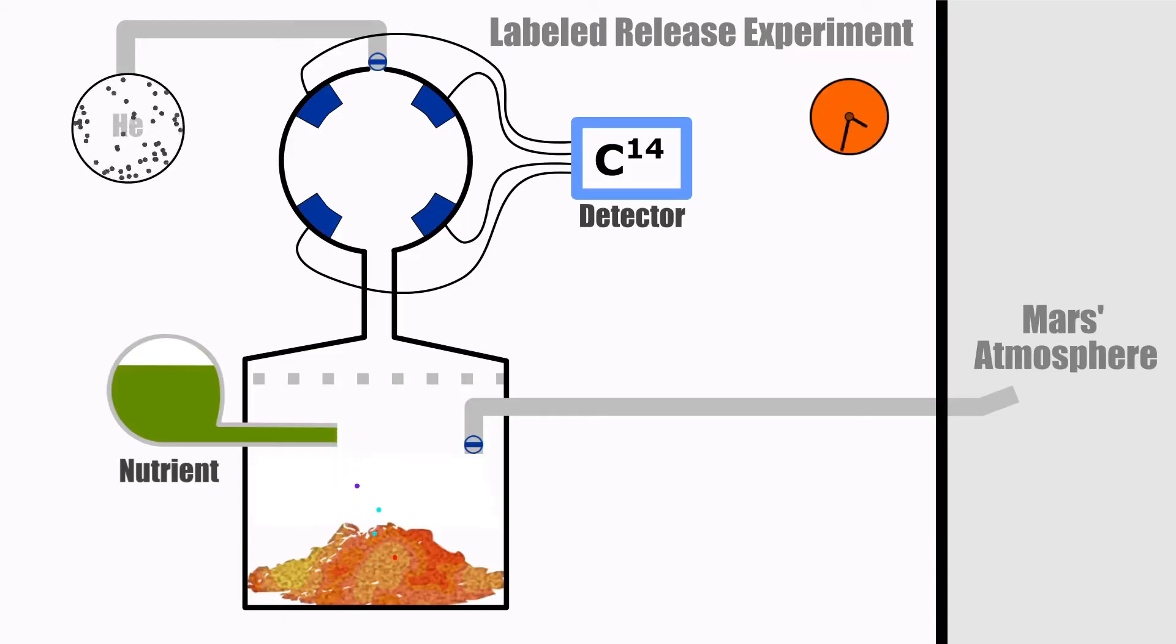If organisms in the soil are using the nutrients and releasing CO2, then they will in time accumulate inside the detector chamber where they will be detected. The radioactivity in the detector chambers is monitored continuously for the first 7 Martian days. After that, more nutrition is added to the soil and the detector monitors the carbon-14 for another 6 Martian days.